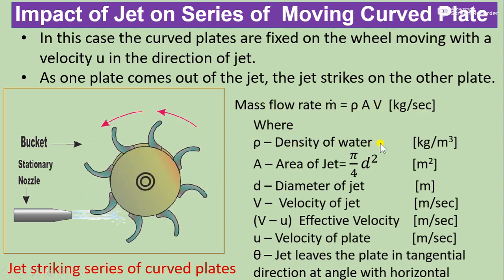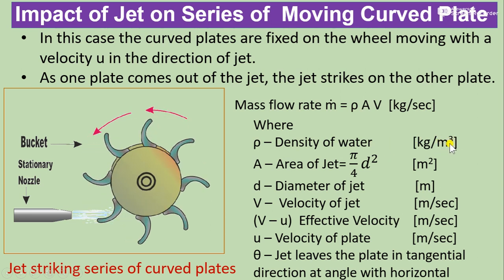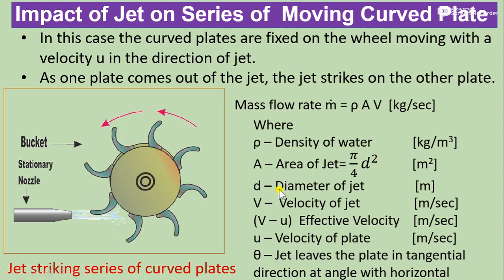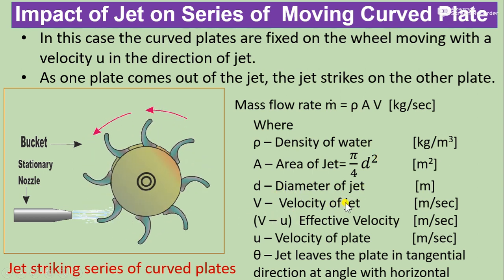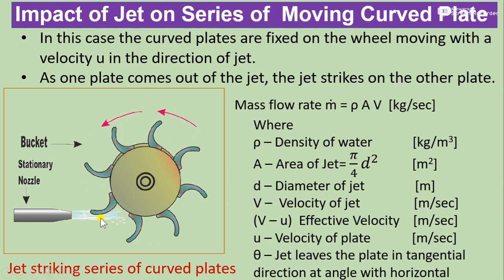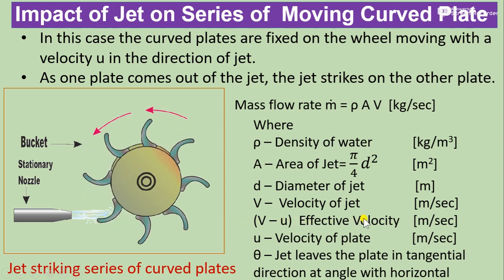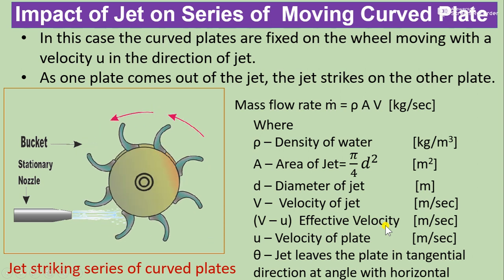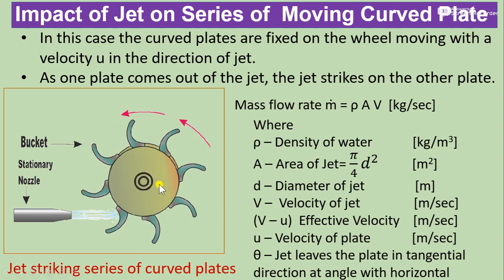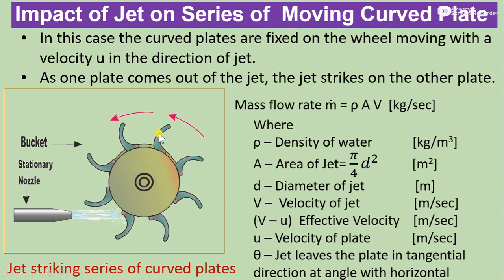In this case, mass flow rate of the jet is taken as m-dot equals rho times a times v, in kg per second. Here rho is density of water in kg per metre cube, A is the area of the jet equal to pi by 4 times d squared, where d is the diameter of the jet, V is the velocity of the jet, U is the plate velocity, and V minus U is the effective or relative velocity.